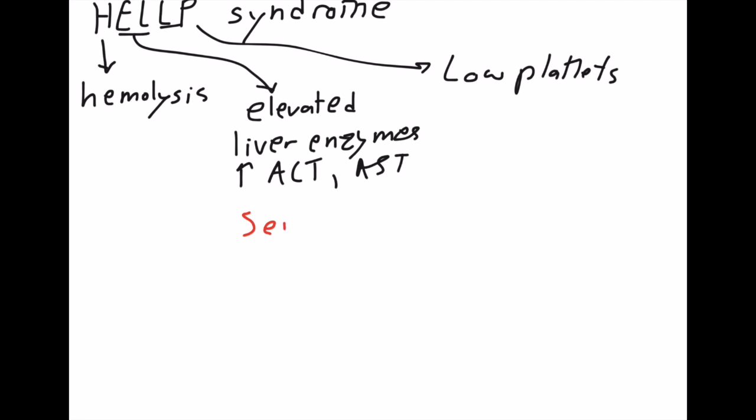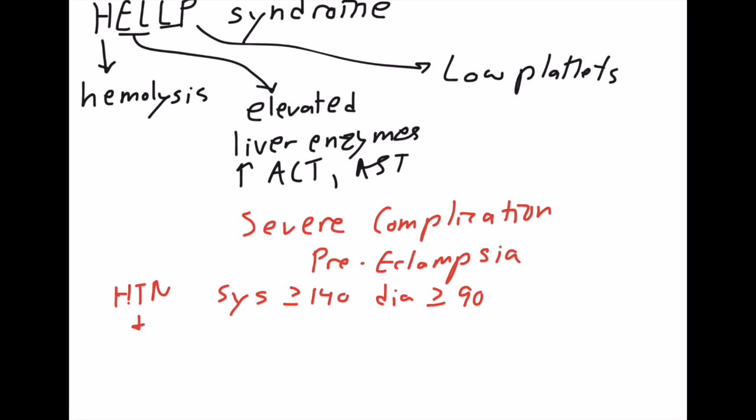Like I said, this is a complication of severe preeclampsia. So what is preeclampsia? It is characterized by hypertension in a pregnant mother with a systolic of 140 or a diastolic 90 and proteinuria. It's going to be seen in mothers with an infant greater than 20 weeks gestation.